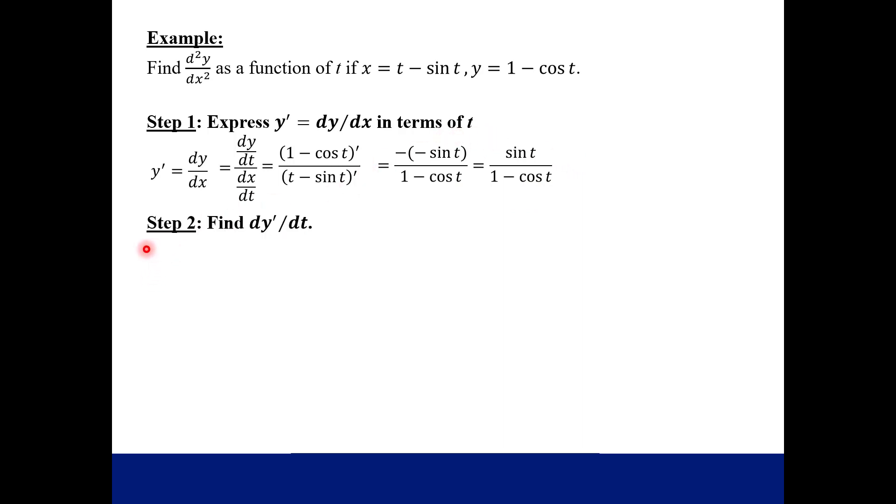Our next step is to find the derivative of the derivative. So the derivative of y prime with respect to t is just the derivative of what we just came up with. So we're just differentiating again. This time, you are going to have to use your quotient rule because of how this function looks. So according to our quotient rule, we have the derivative of the top times the bottom minus the top times the derivative of the bottom all over the bottom squared.